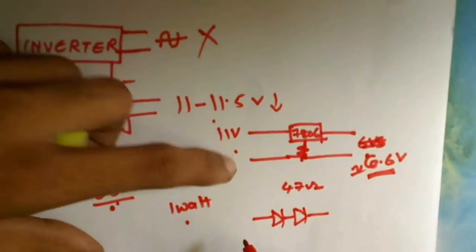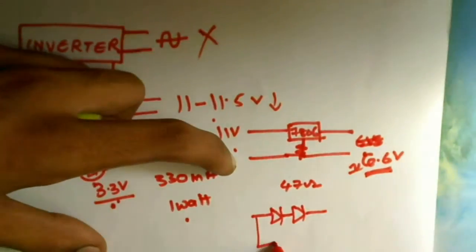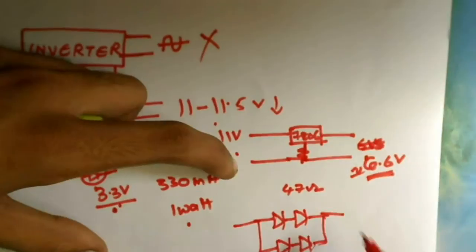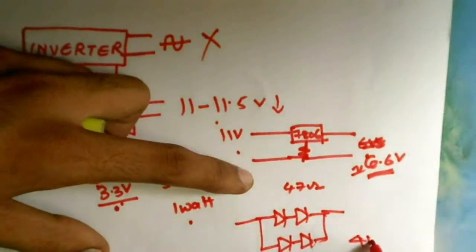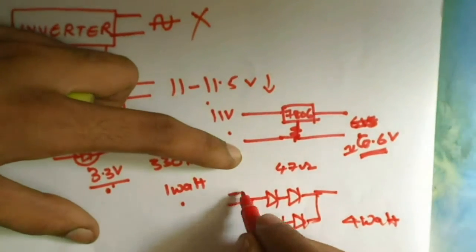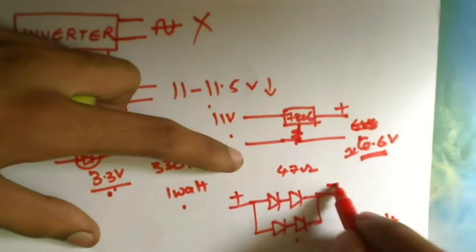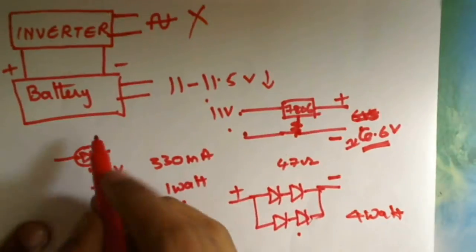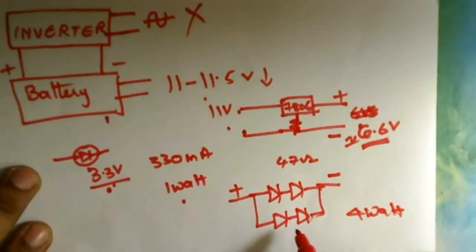And what we're going to do is we're going to connect two such chains in parallel. So now this is the 4W bulb. When we connect this positive to this positive and this negative terminal to this negative terminal and these two terminals are connected to the inverter battery, then these LEDs will be lit.